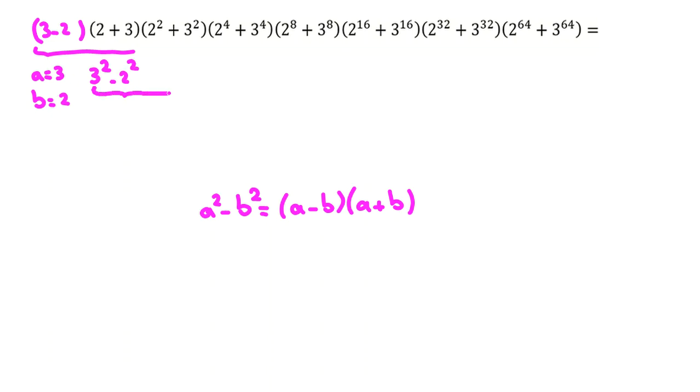Now, we multiply the results again here. (3² - 2²)(3² + 2²). If we use this identity again, it will be 3⁴, or 3 squared squared.